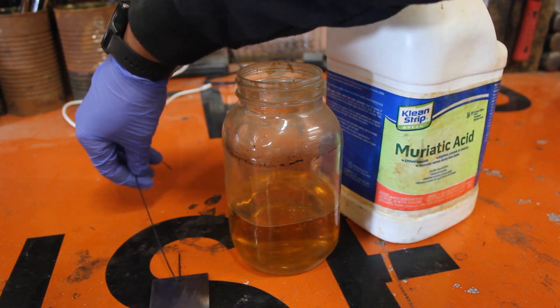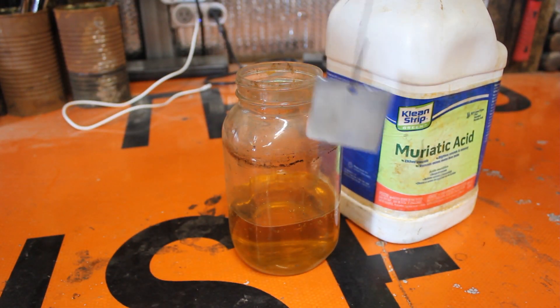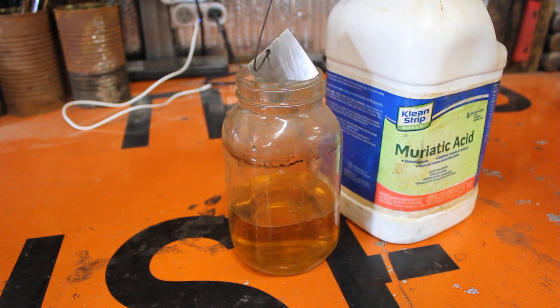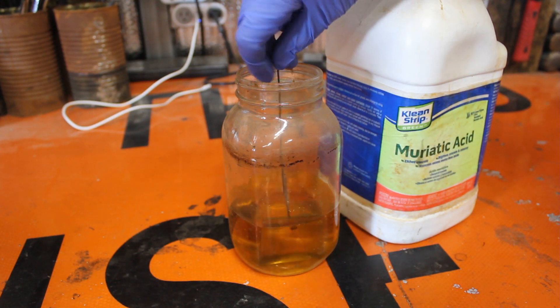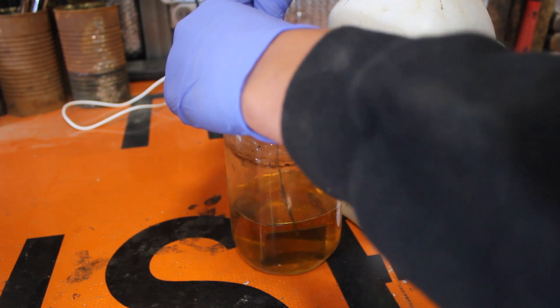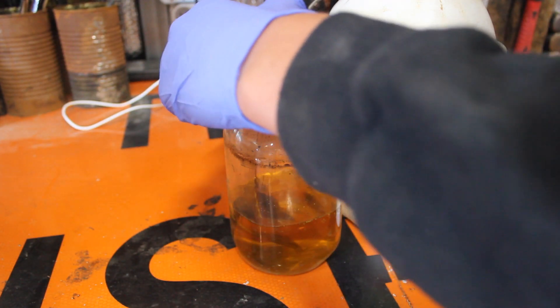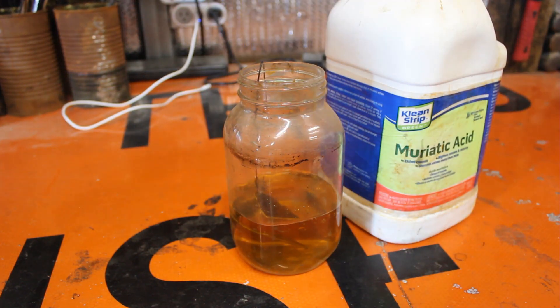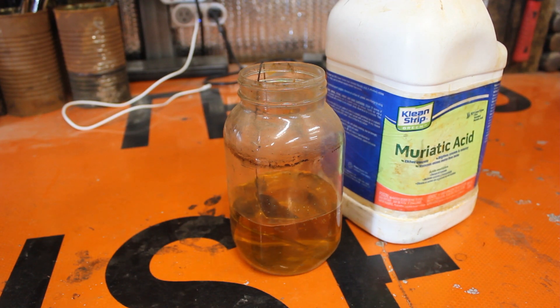All right we're going to apply the first thing and we're just going to take this muriatic acid and we're going to dip this metal in it and we'll leave it there until it gets that nice gray acid tone. Let's go ahead and do the other ones now.